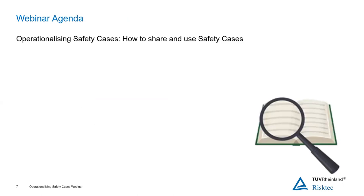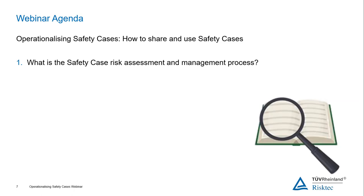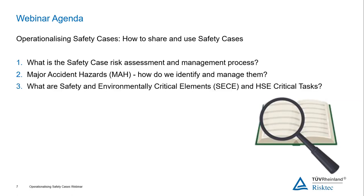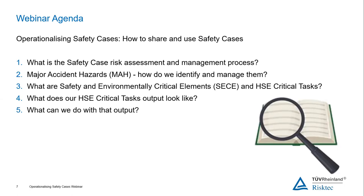So what does that look like as an agenda? We're going to start with a review of what a safety case risk assessment and management process looks like, and what major accident hazards are — how we identify and manage them. Then we'll look at safety and environmental critical elements, the SECIs, and what HSE critical tasks are. We'll look at what the output looks like — what your HSE critical task list actually contains — and what we can do with that output. And as Mark said, there'll be a Q&A at the end, so feel free to ask anything.